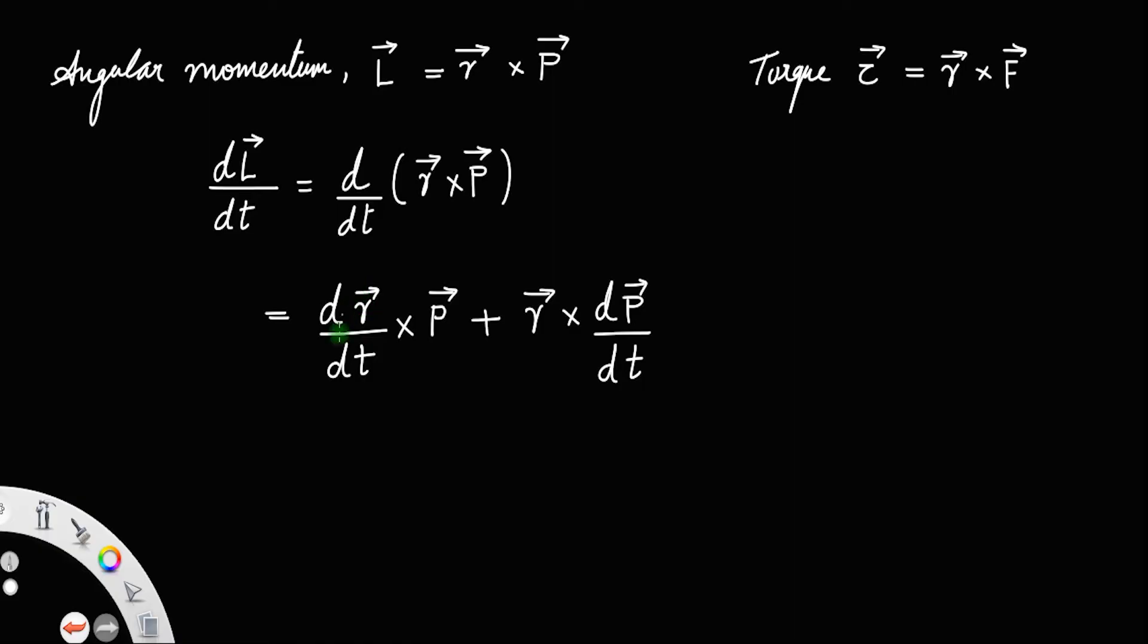You know dR by dt, the rate of change of position of a body with respect to time gives the velocity V equal to dR by dt. So you can substitute V for dR by dt.